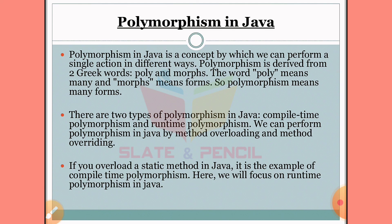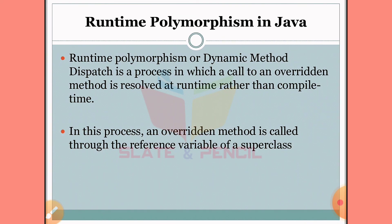Runtime polymorphism is the main focus of dynamic dispatch. Runtime polymorphism in Java is a process in which a call to an overridden method is resolved at runtime rather than at compile time.